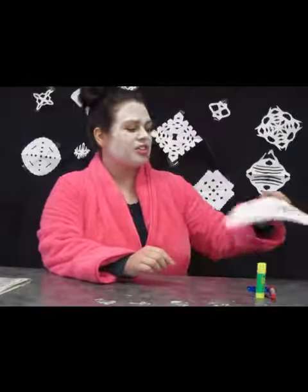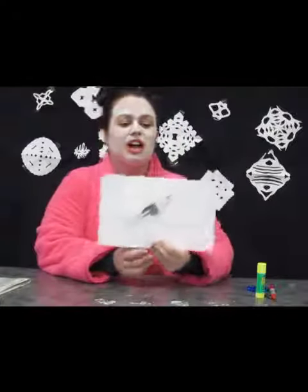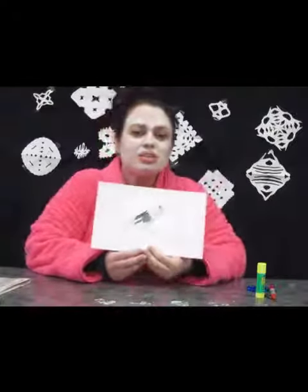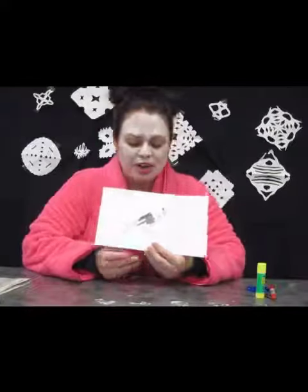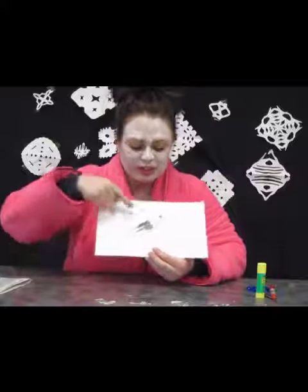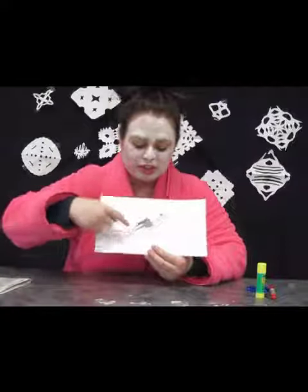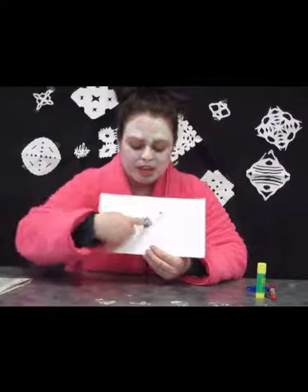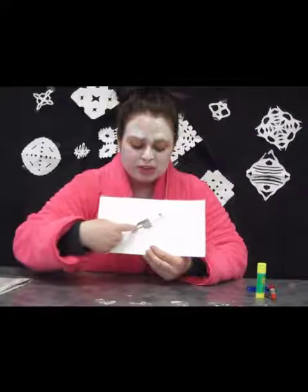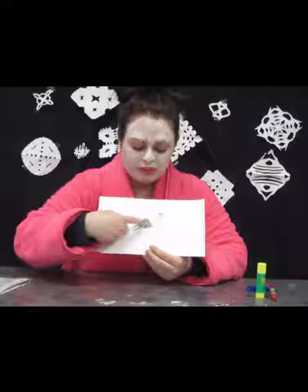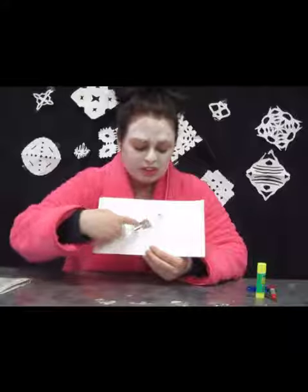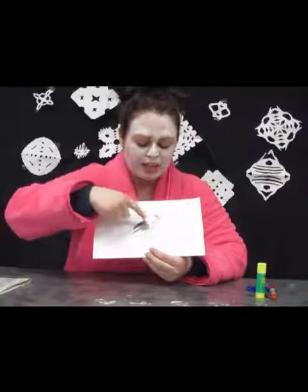I've already started to collage into my bird with the different kinds of values. I have the dark for the wings, the medium values for the chest of the bird, and then the bright white of the feathers.